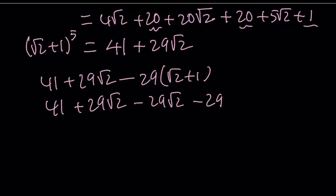41 plus 29 root 2 minus 29 root 2 minus 29. There's a reason why 29 was given there, so go ahead and cancel those out. 41 minus 29 is equal to 12. So that will be our answer. That is the first method. Let's go ahead and talk about the second method.